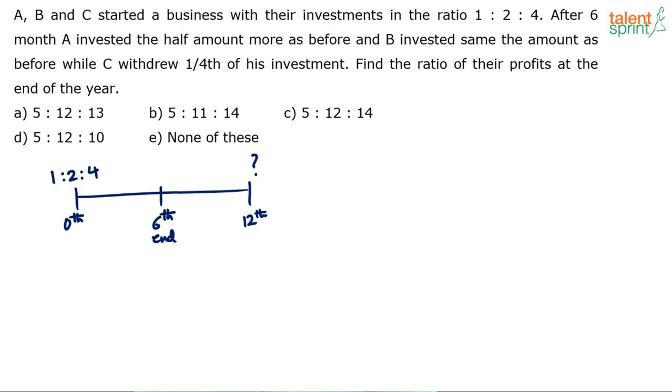A invested half the amount more as before. So earlier his investment was 1. Now he has invested half plus half. What about B? B invested the same amount as before. Earlier B invested 2, now he has invested 2 again - same amount as before, plus 2 again. And C withdrew one-fourth of his investment. One-fourth of what? 4. C's investment was 4 rupees. C has withdrawn one-fourth of it. So one-fourth of 4 is how much? 1 rupee. So one-fourth of 4, which is equal to 1. So minus 1 for C.